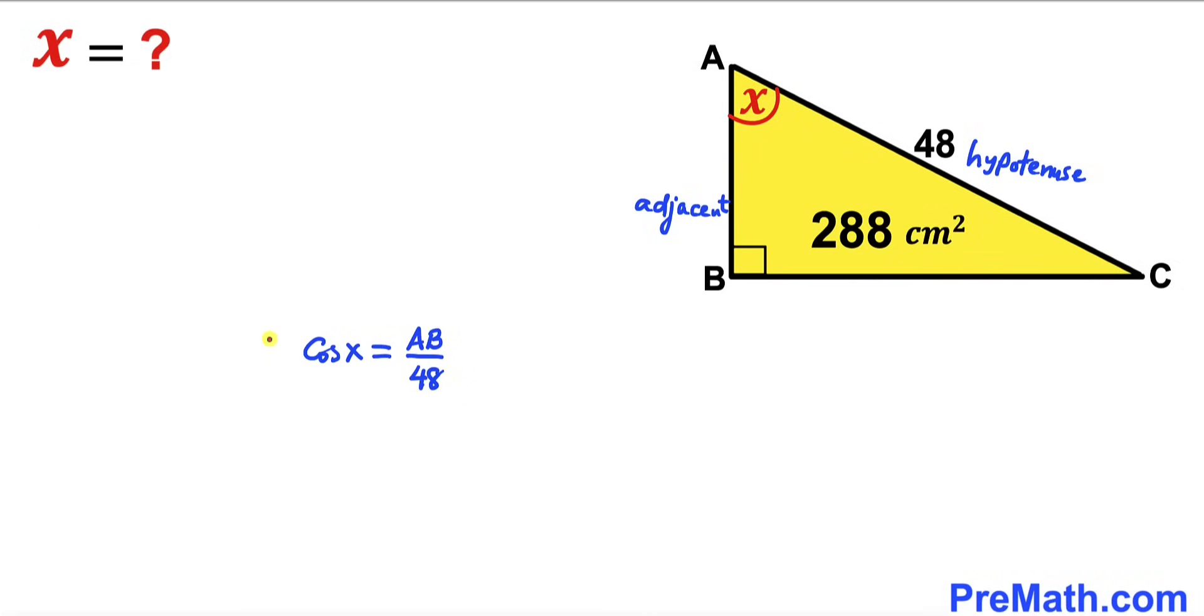Now let's multiply 48 on both sides to remove this fraction. The 48s cancel. Therefore, our AB length turns out to be 48 times cosine of X. Thus, side length AB equals 48 cosine X.